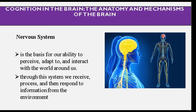The nervous system is connected with the brain because it is the basis for our ability to perceive, adapt, and interact with the world around us. Through this system, we receive, process, and then respond to information from the environment. Whatever our brain tells us to do, it serves as a connection to our movement. Everything functions well because of the nervous system, because it connects how we perceive the environment.